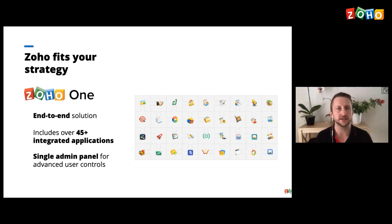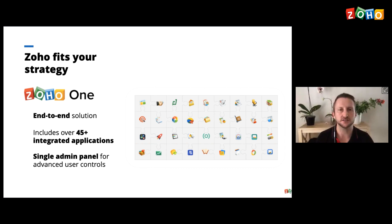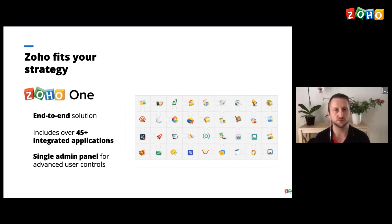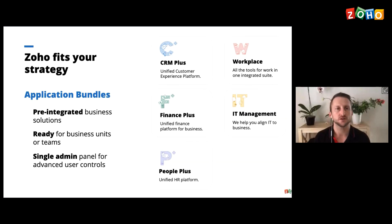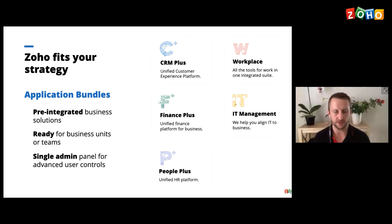Zoho One is a complete package solution — a bundle of all 45 applications — and you get them for a really affordable price. There's an all-employee pricing and then there's also individual user pricing. We also have smaller bundles: CRM Plus, Workplace, Finance Plus, IT Management, and People Plus. Those are just smaller bundles of applications.